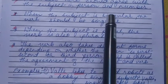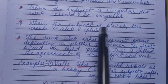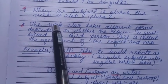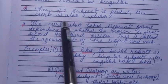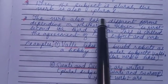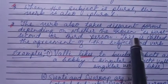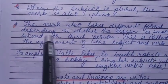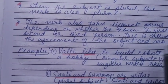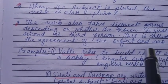When the subject is singular, the verb should be singular. When the subject is plural, the verb is also plural. The verb also takes different forms depending on whether the noun is first, second, or third person. This is called the agreement of the subject and verb.